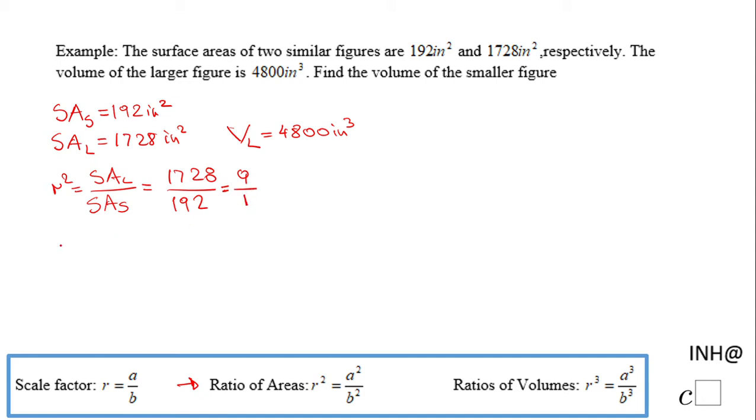For finding r, I'm going to take square root of 9 over 1, and I will suggest you to keep it as a fraction, especially if the denominator is not 1. In this case we get 3 over 1. This is the scale factor for these two similar figures.